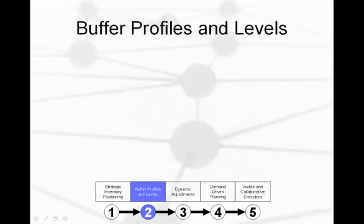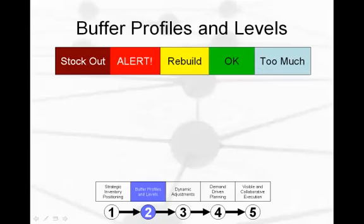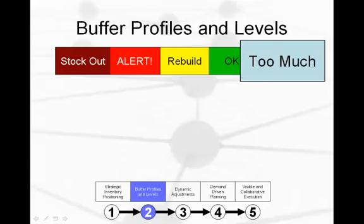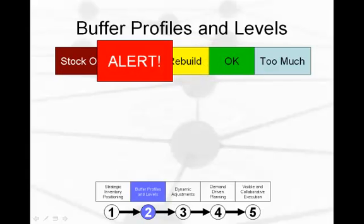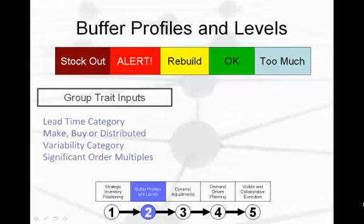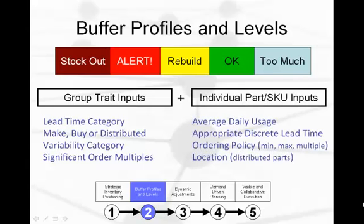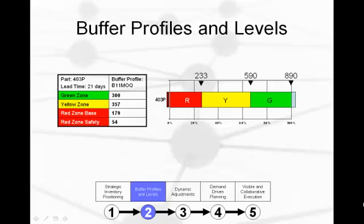The next part of the DDMRP solution involves setting buffer profiles and levels. Now that we know where to position inventory, we have to set and manage inventory levels. Levels will be managed by an intuitive color coding system: light blue for too much, green for OK, yellow for rebuild, red for alert or warning, and dark red for stockout. Items are grouped into buffer profiles by like attributes with regard to lead times, whether they are made, bought, or distributed, how variable they are, and whether there are significant order multiples involved. These globally managed group traits are then combined with key individual item attributes, creating a unique buffer level and zonal distribution for each item.